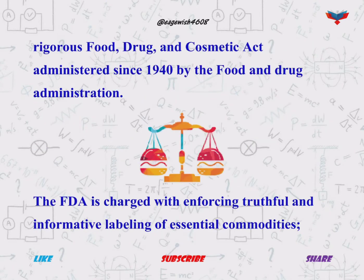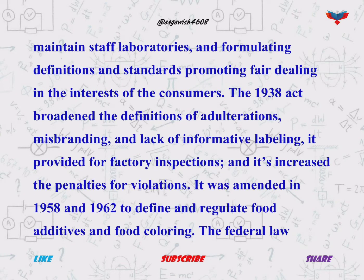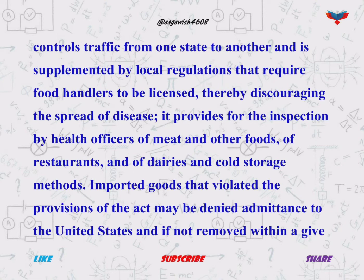Examples of food adulteration include: mixing of pulses with sand particles and pebbles, mixing of milk with water, and mixing oil with chemical derivatives or cheaper oils.